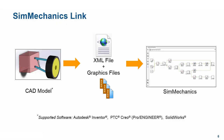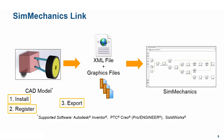SimMechanics Link is an add-on that automatically converts a CAD assembly into a SimMechanics block diagram. We can download and access documentation for the SimMechanics Link product from the MathWorks website. The CAD platforms supported are Autodesk Inventor, PTC Creo, and SolidWorks. The workflow is: install SimMechanics Link, register it with supported CAD software, export a CAD model into XML and graphics files, and then import the XML file into SimMechanics. Steps 1, 2, and 3 require CAD software to be installed on our machine.